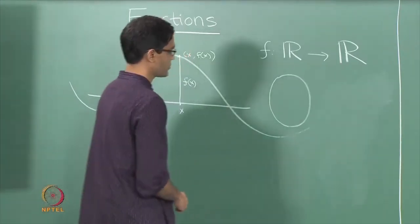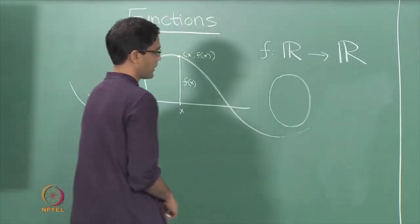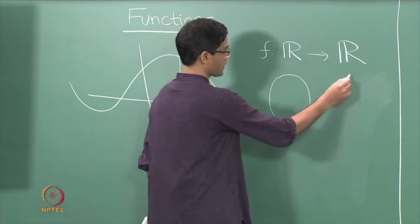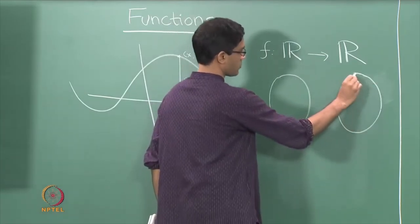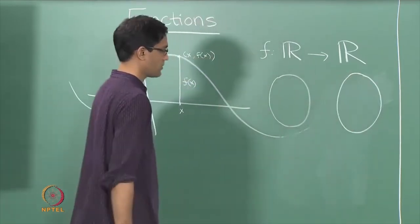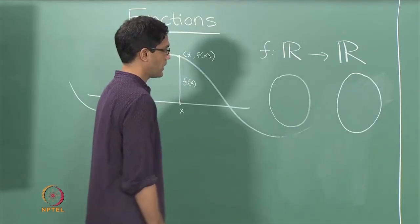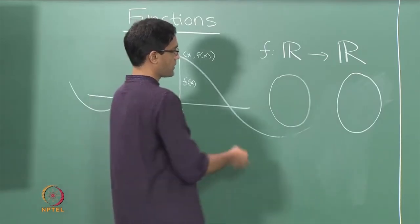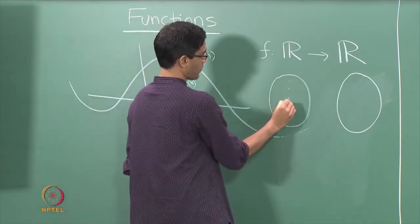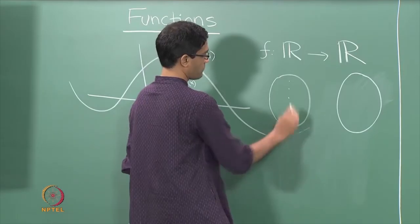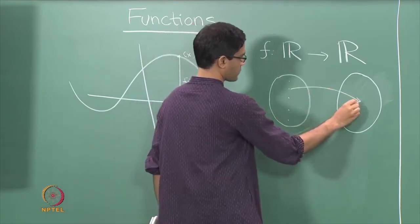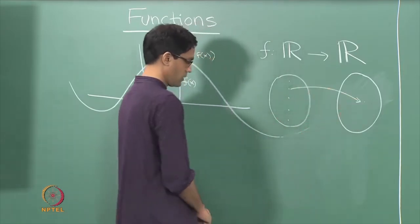Recall that the formal definition of a function requires two sets: there is a domain and a co-domain. In this example, both domain and co-domain are just the set of real numbers. The function is thought of as mapping each point of the domain to some point of the co-domain.